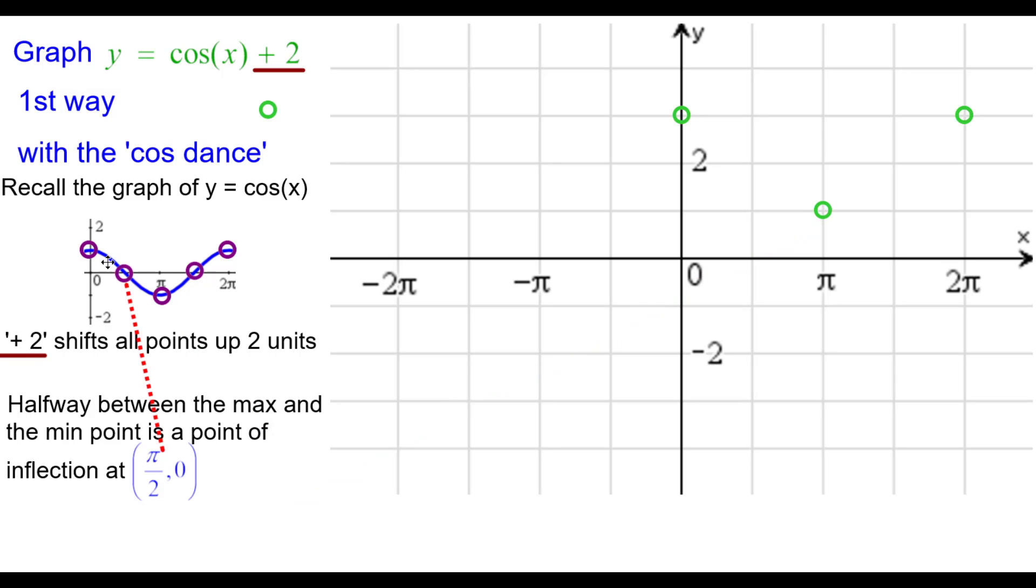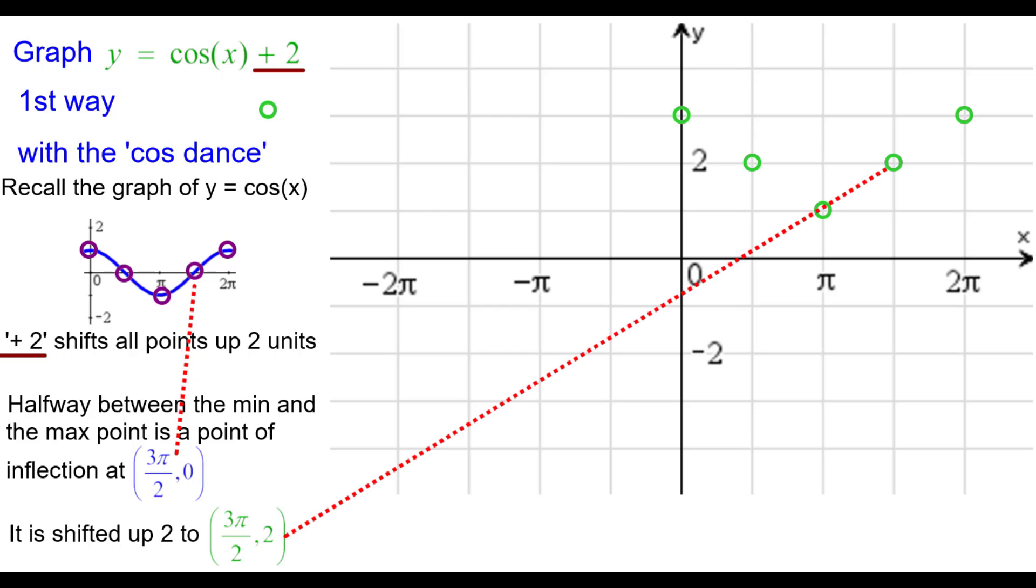Halfway between these two points, it's going to be a point of inflection at pi over two comma zero. So it will be shifted up two to pi over two comma two. And then halfway between these two points, another point of inflection, normally at three pi over two comma zero, but now up to three pi over two comma two. Press pause as needed.